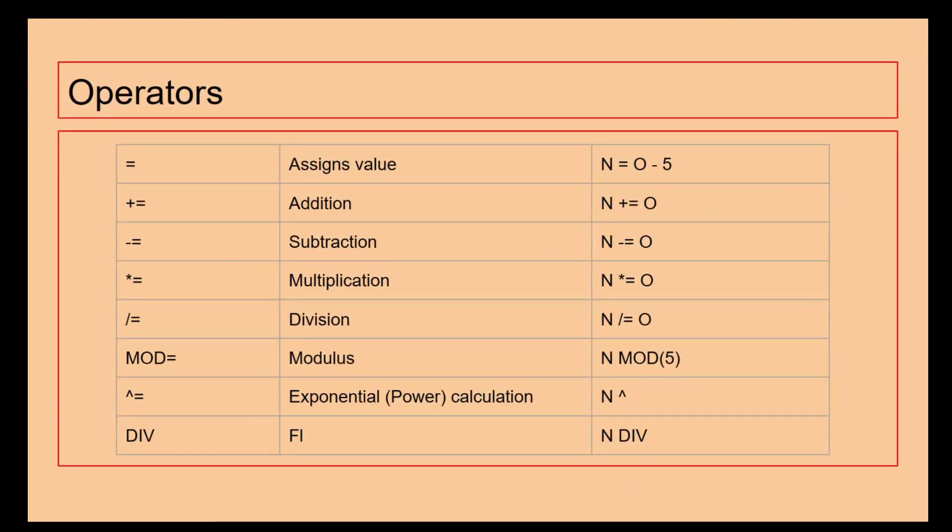So we've got loads of different operators. We can use different pieces of maths. We've got the top one, which just assigns a value. So n on this table is any form of number. We are saying that n equals 0 minus 5. So we're doing a little bit of maths there. We can see on the next one, addition plus equals means that n is being added to itself and is being equal to 0. We've got subtraction, multiplication, division.